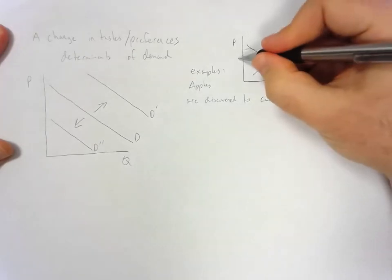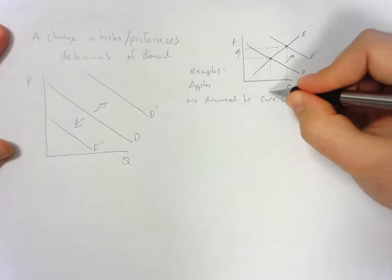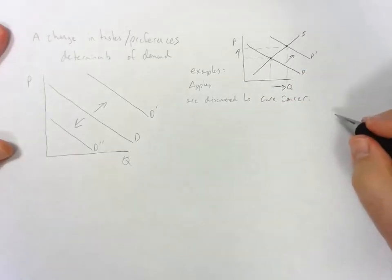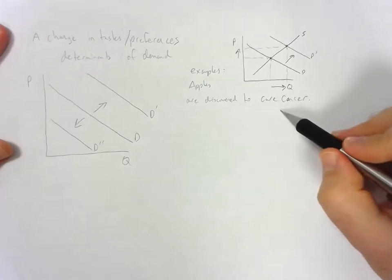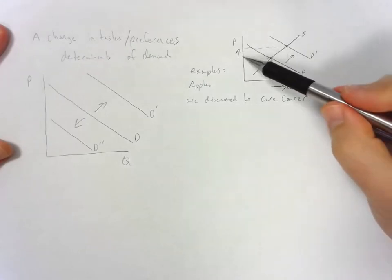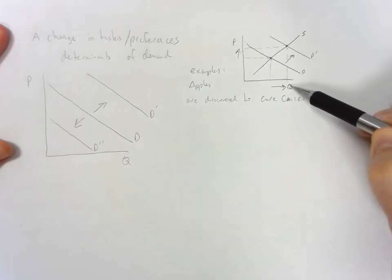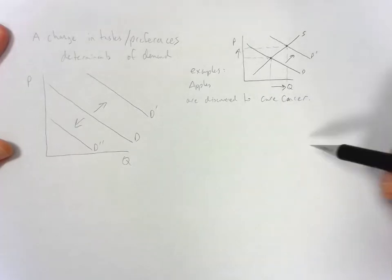And so, what happens to equilibrium price and equilibrium quantity? They both go up. If apples are discovered to cure cancer, as we would expect, the price is going to go way up because demand increased, and equilibrium quantity will also go up because of that increase in demand.